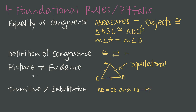The last foundational rule is that transitivity is not substitution — it's easy to mix these up. If AB equals CD and CD equals EF, then by the transitive property AB equals EF; we build a new equation from two others. Substitution, on the other hand, is where we replace some quantity with an equal quantity inside an existing statement. For example, if AB equals 2x+1 and CD equals 3x−6, we could substitute those values into AB = CD to get a new equation. We have to use the right name for the action we're doing in our proof.